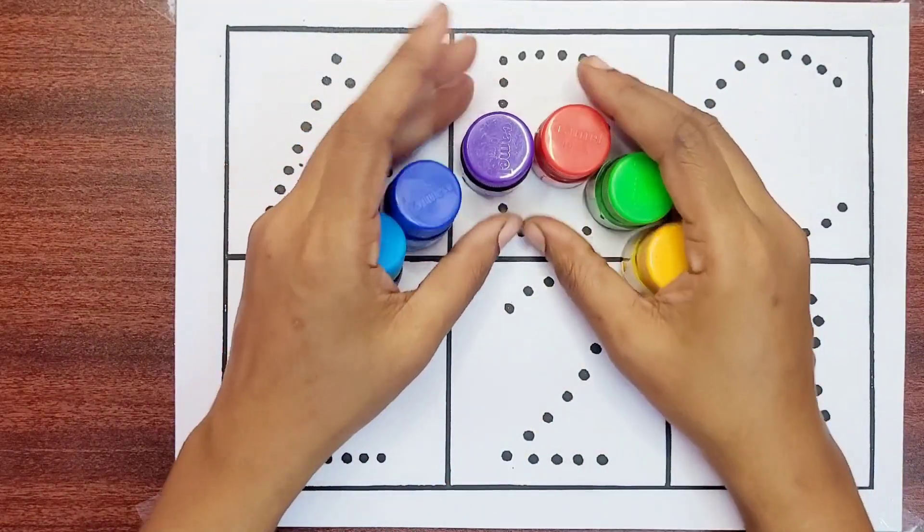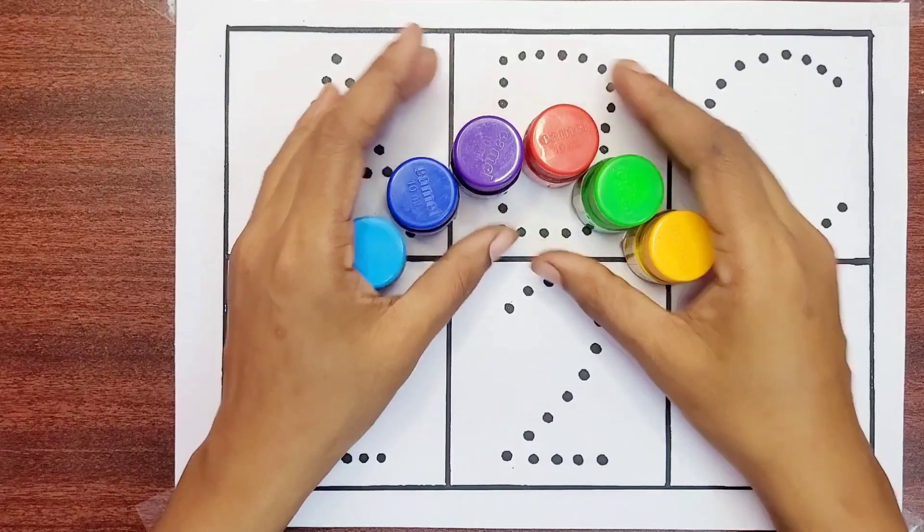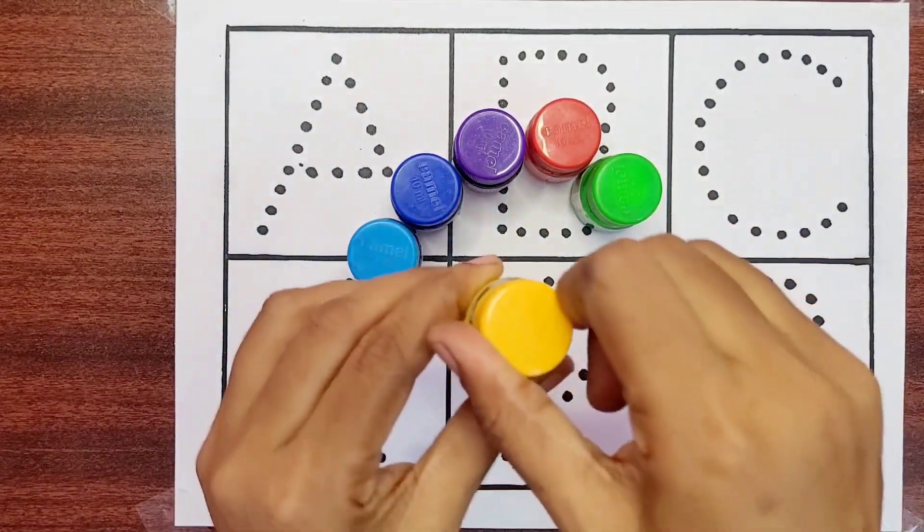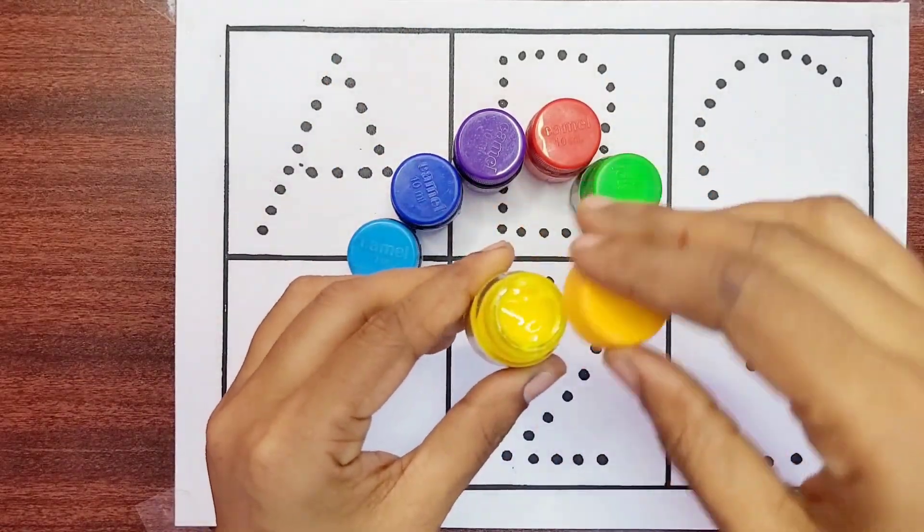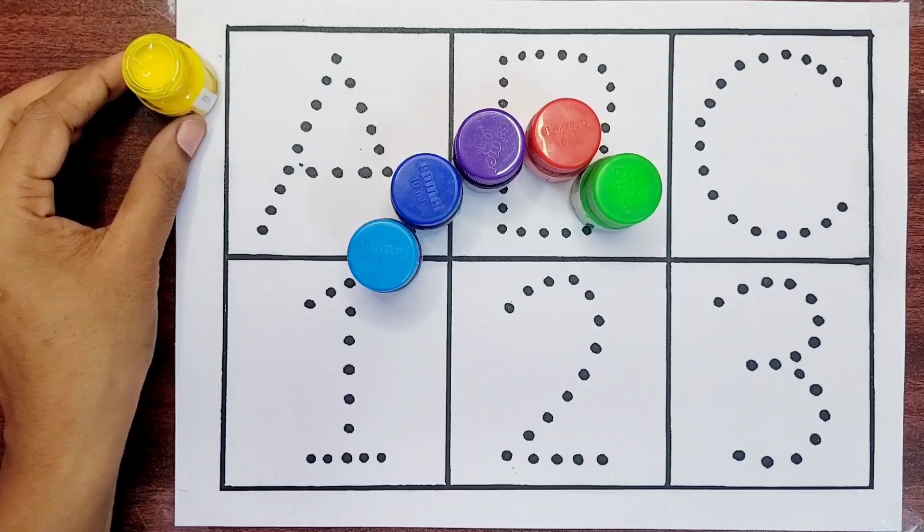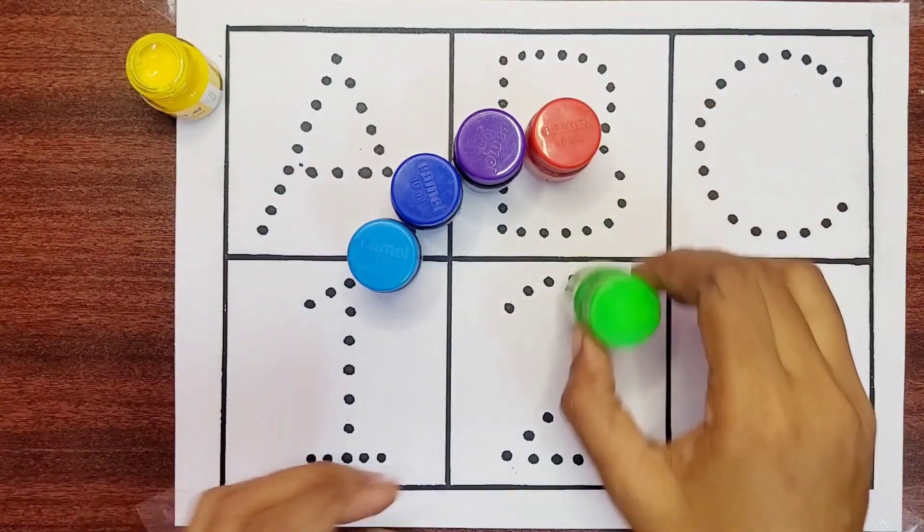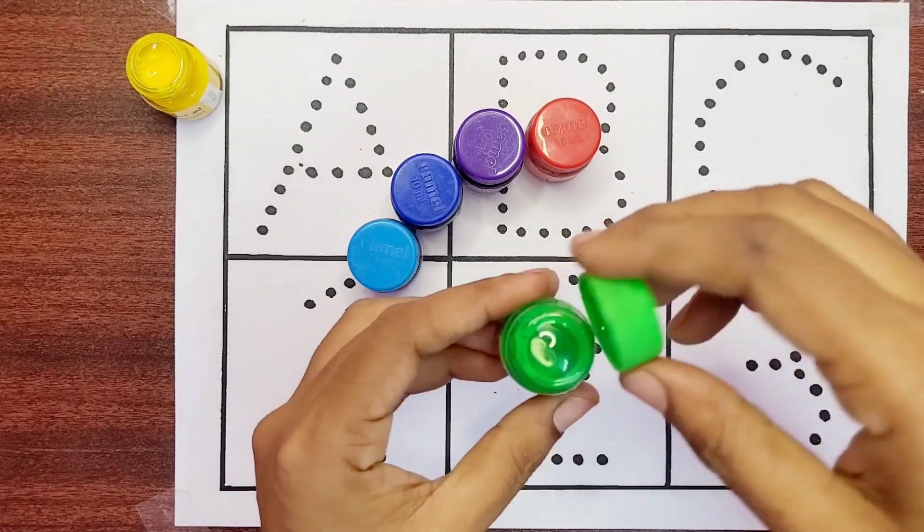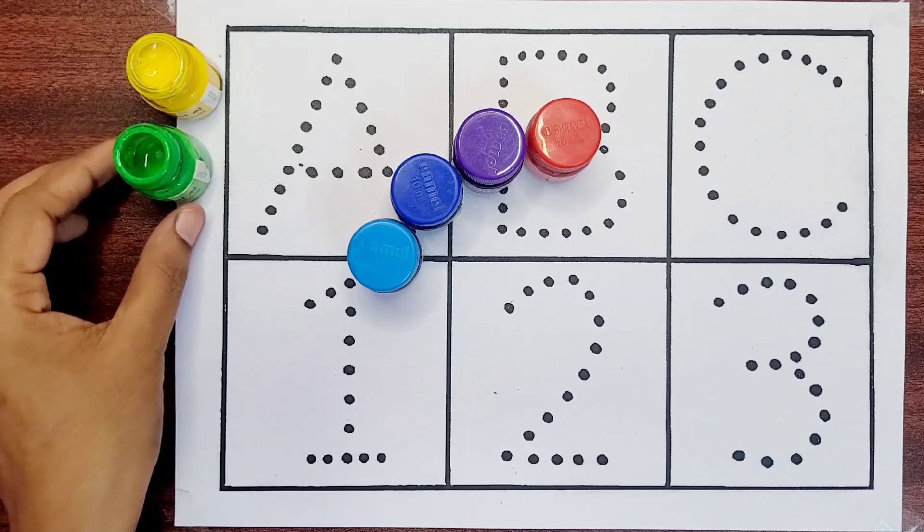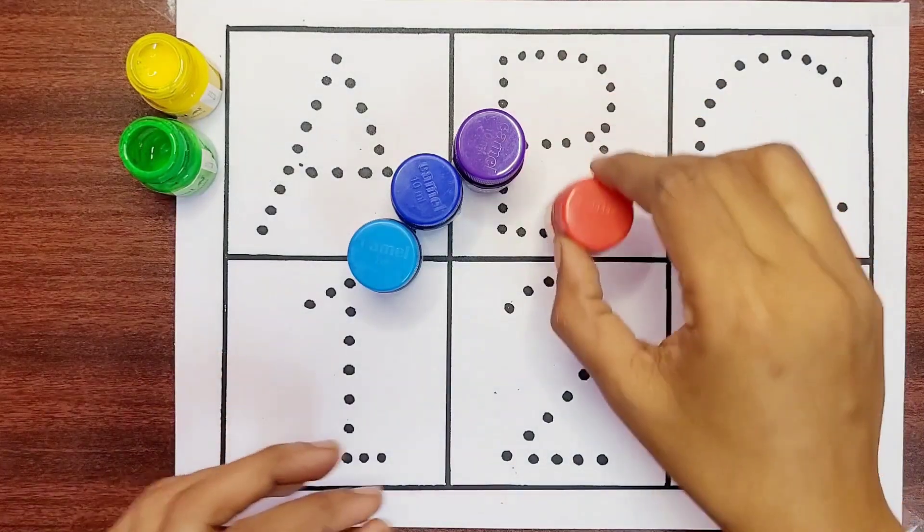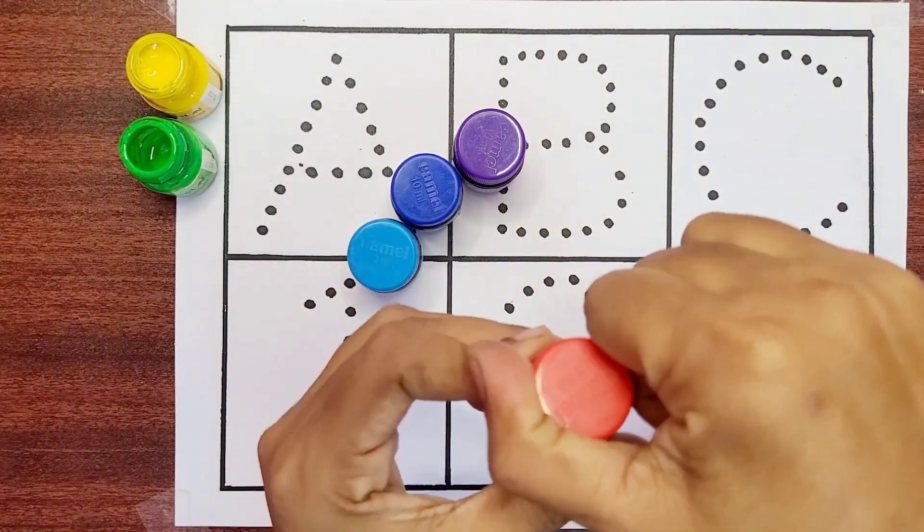Let's learn the colors' names. This is yellow color, yellow. This is green color, green. This is red color, red.